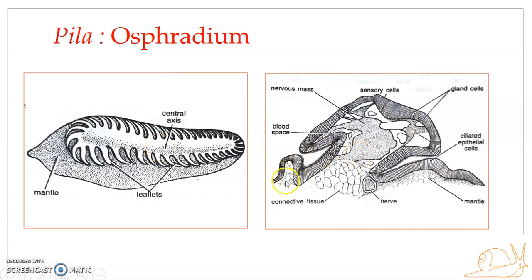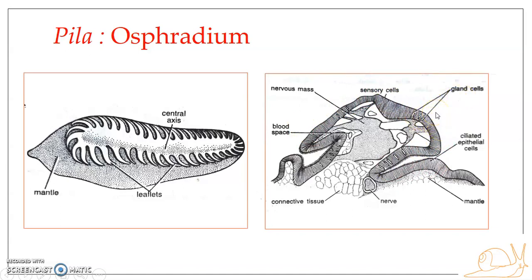The figure on the right side shows the transverse section of the osphradium. In transverse section, the osphradium consists of an outermost layer formed of a single-layered epithelium. The cells forming this epithelium can be differentiated into three types — the epithelium is provided with cilia. The three different types of cells making up the outermost epithelial covering are: ciliated epithelial cells, sensory cells, and glandular cells.